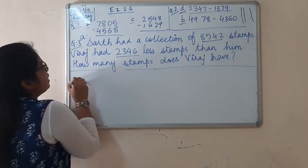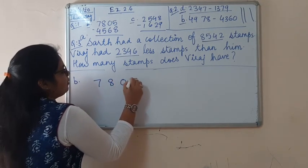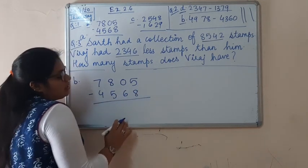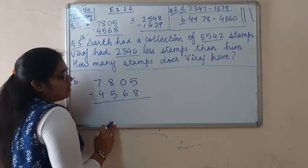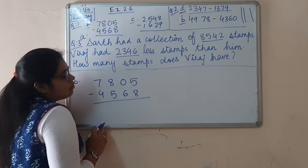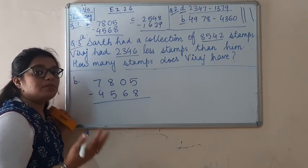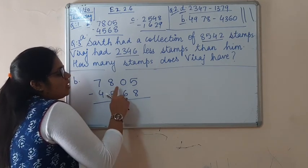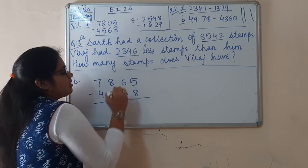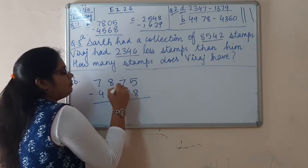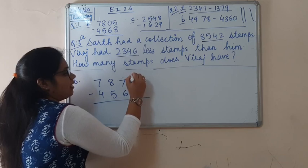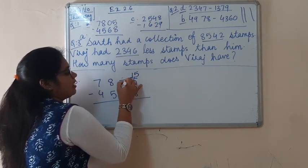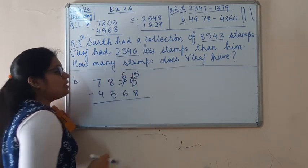Let's solve question b of question 1: 7,805 minus 4,568. As you can see, 5 is smaller than 8 — 5 minus 8 cannot be subtracted. So we need to borrow 1 from 0. But this is 0. If it would have been 6 or 7, then we could have given 1 to 5, making it 15 — that 1 coming from 7, making it 6.